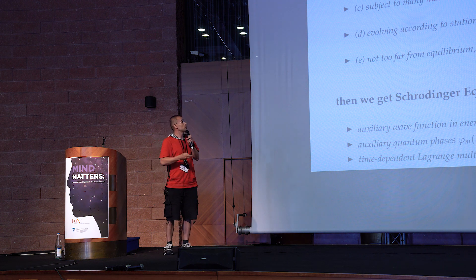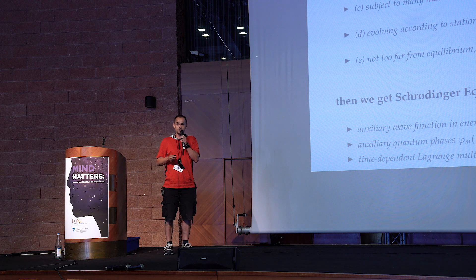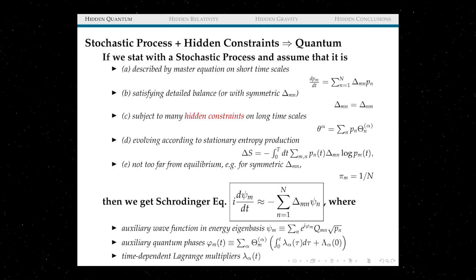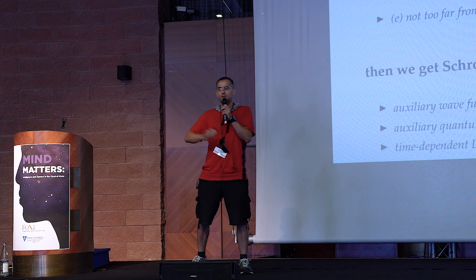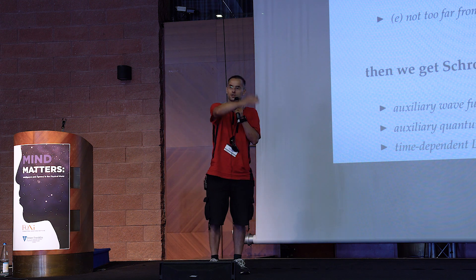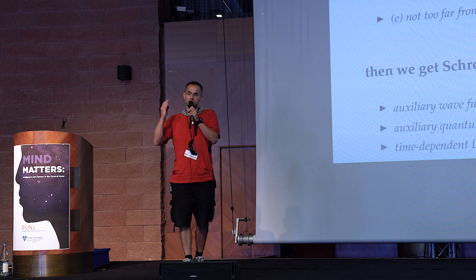So the first calculation is you consider a stochastic process which you think is Markovian on short time scales and it has lots of constraints which are hidden. So think about FQXI member after the dinner really drunk walking around doing a random walk and you think this is all it is, but no, he knows he has to go home and call his wife tonight. Those are the constraints.